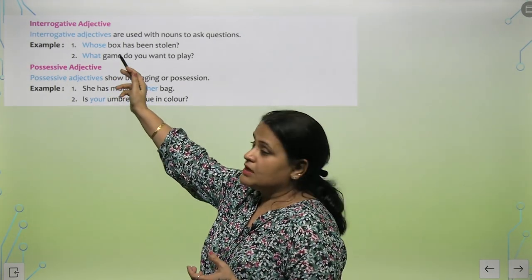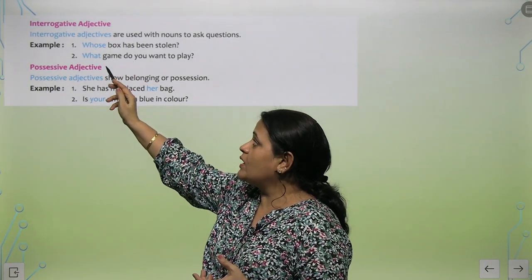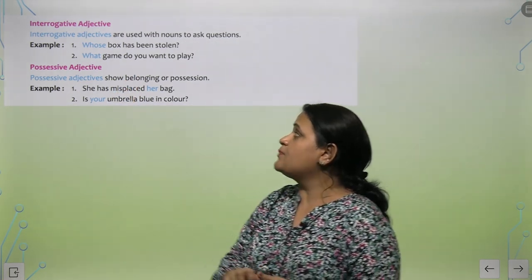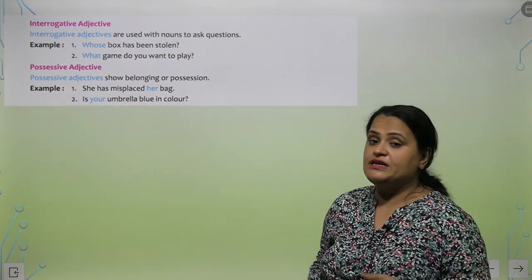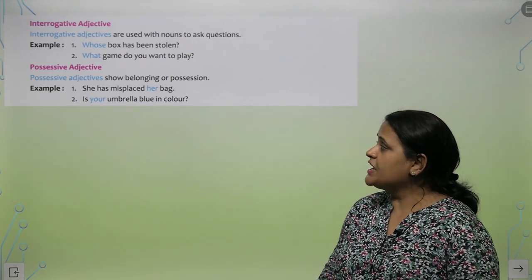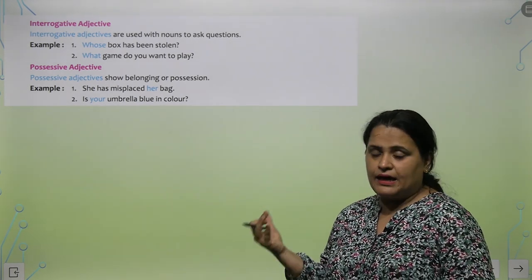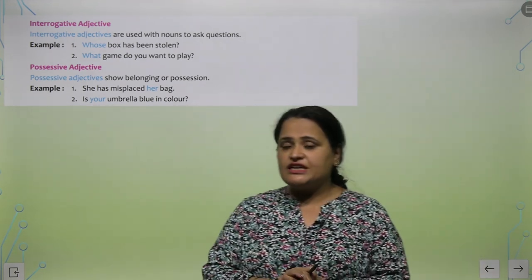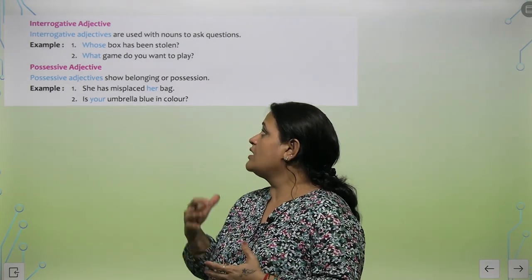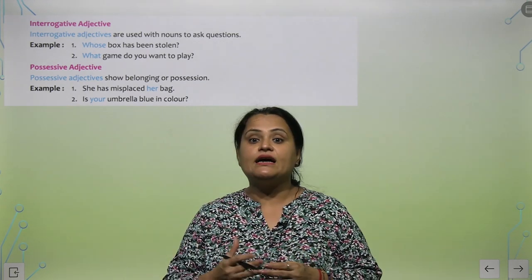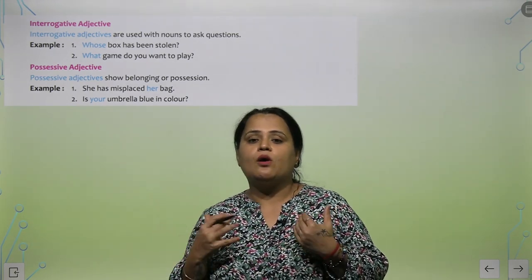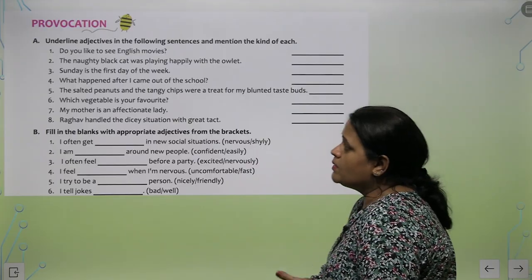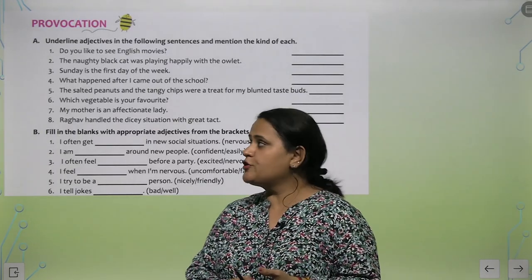Interrogative adjectives — examples: 'Whose box?' — box is a common noun. 'What game?' — game is also a common noun. 'Whose box has been stolen?' 'What game do you want to play?' Next is possessive adjective — possessive adjectives show belonging or possession. Woh kya dikhate hain? Possession or belonging — ke yeh humari chiz hai.